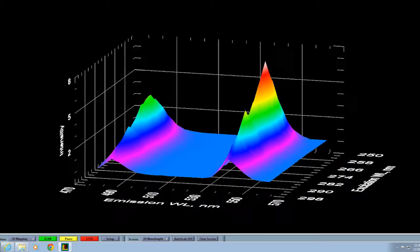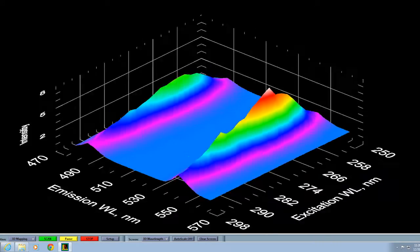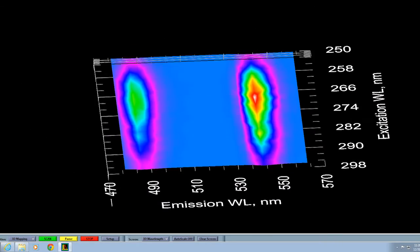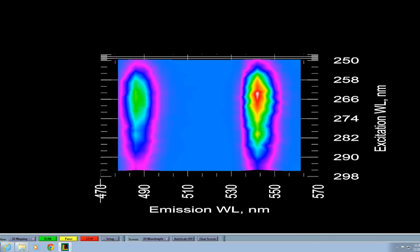Having collected the data now the user can interrogate that and look at it in the emission wavelength plane, in the excitation wavelength plane, or as is quite often reported looking directly down on the data looking at both XY and where those wavelengths all cross over.